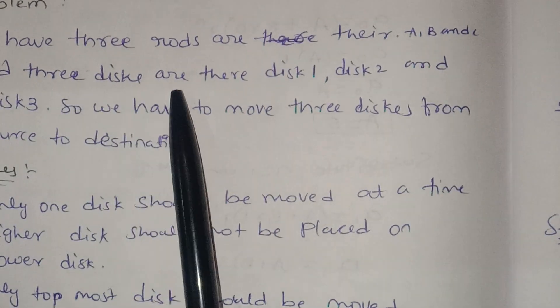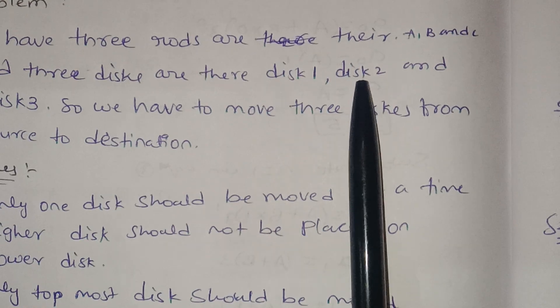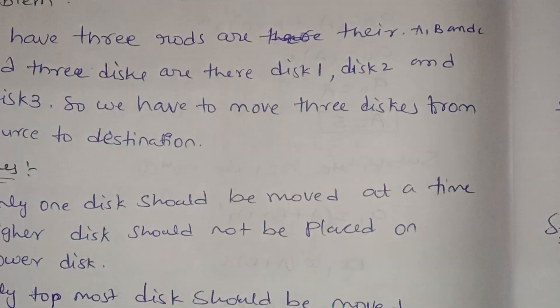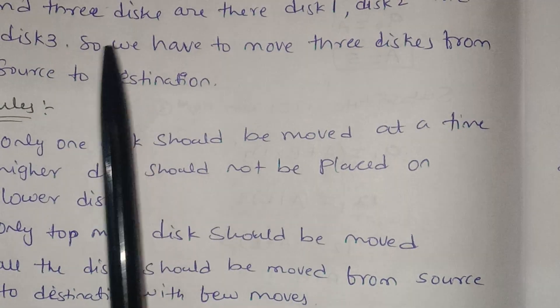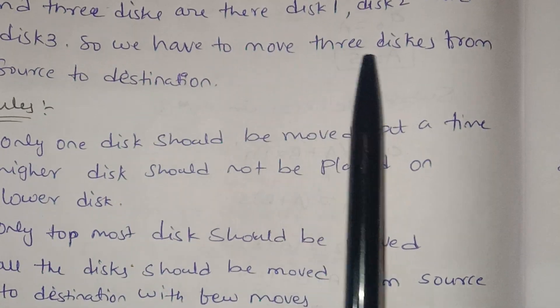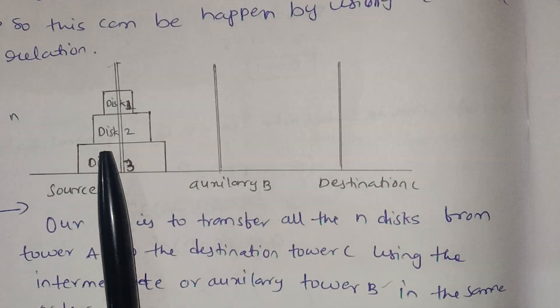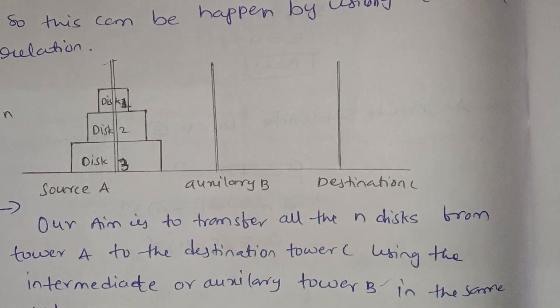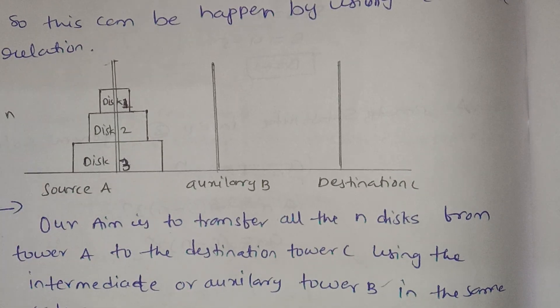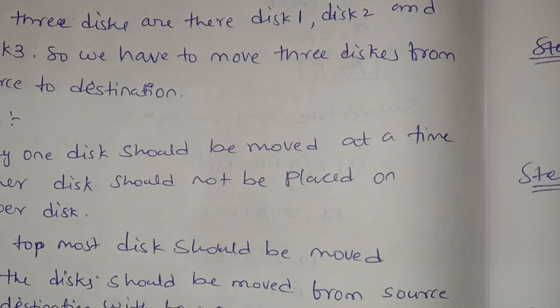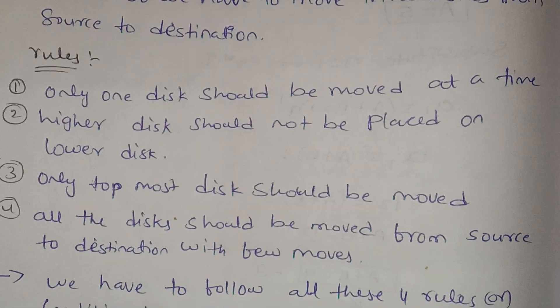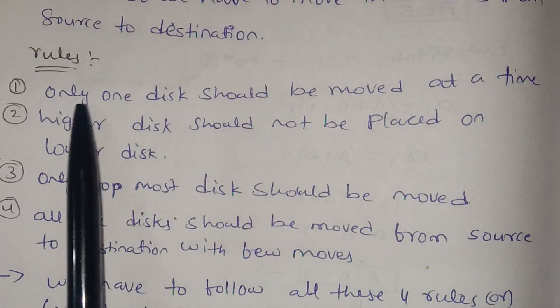Three discs are there - Disc 1, Disc 2, and Disc 3. So we have to move three discs from source to destination. Source A to Destination C.